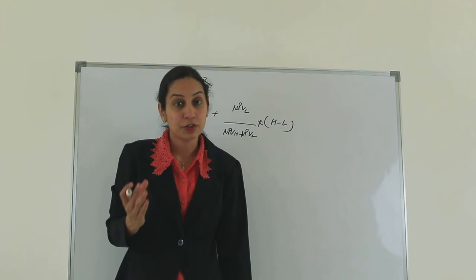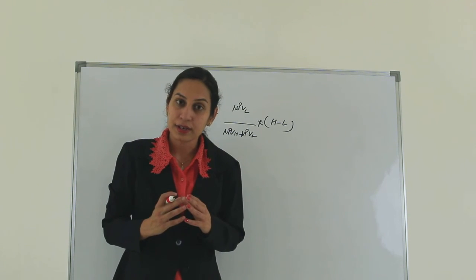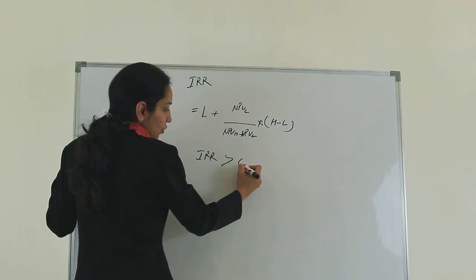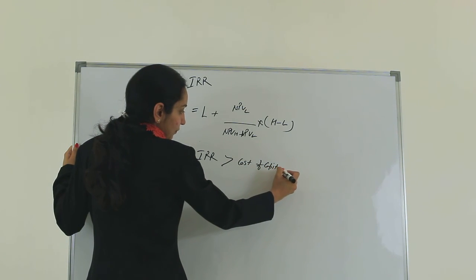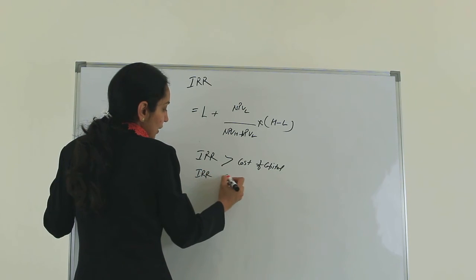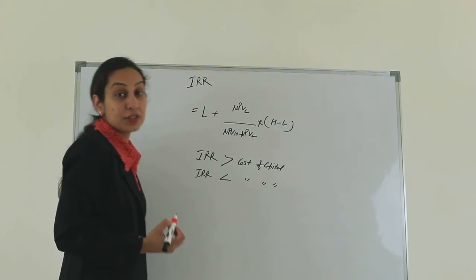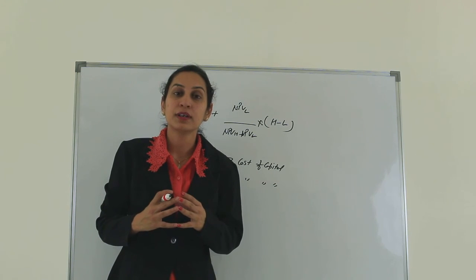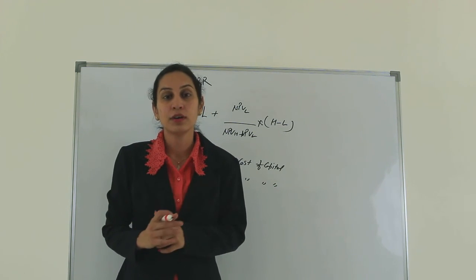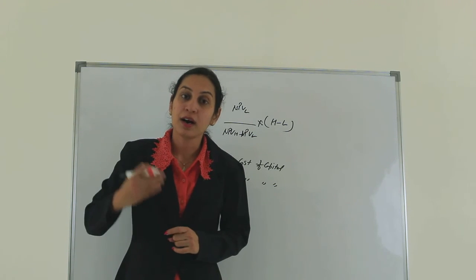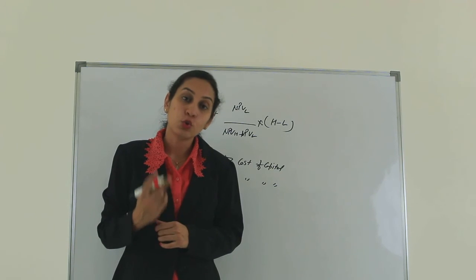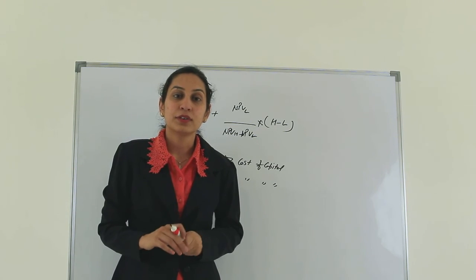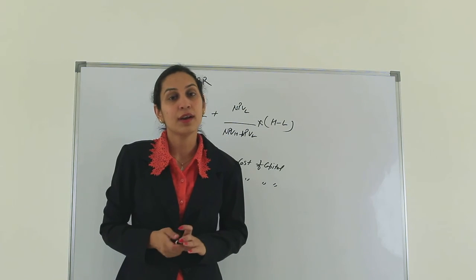Once you get the IRR, the decision criteria is: if IRR is greater than the cost of capital, select the project; if IRR is less than the cost of capital, reject it. A company would not put money into a project that is not even returning what they are spending on capital. If there are two projects, select the one with the higher IRR. That is the method called Internal Rate of Return, or IRR.